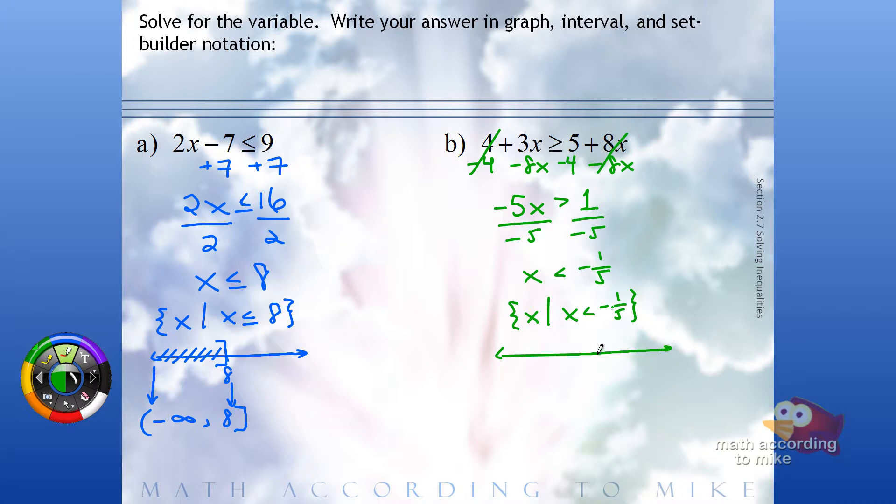Number line. Put negative 1 fifth on the number line. What direction are we going to shade in? I actually can't hear you, but that's okay. We're going to shade to the left because we want less than negative 1 fifth. But since there's no equal sign on the inequality, we use a parenthesis or an open circle.